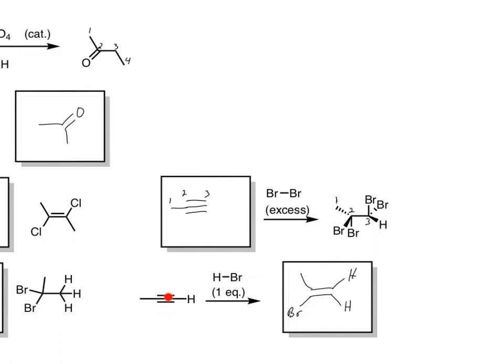HBr one equivalent. Pi bond reacts, breaks, make a carbocation, bromine. I think that added trans, but you're just adding one in this case.